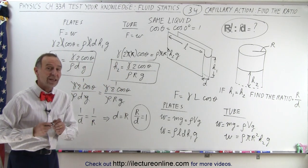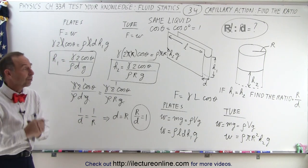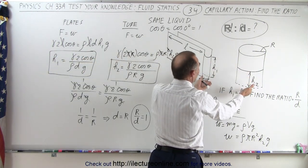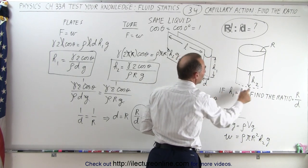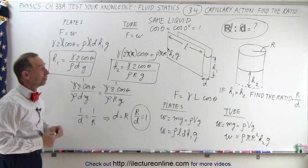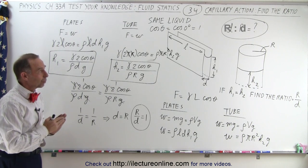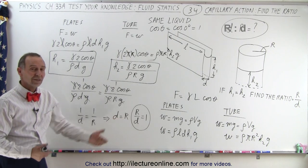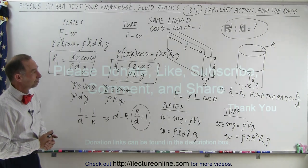In other words, if we have two glass plates or a glass tube with the same liquid, they will draw the liquid up to the same height when the distance between the plates equals the radius of the tube. Interestingly, the length of the plates doesn't matter — only the distance between them and the radius of the tube. If those are equal, the capillary height will be the same in both. Thank you.